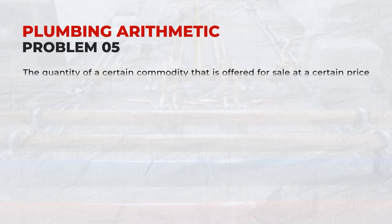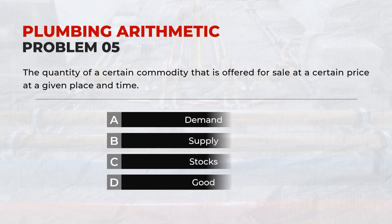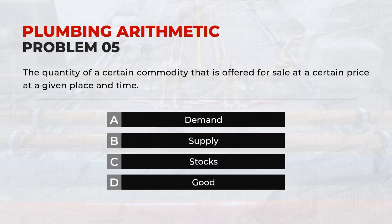The quantity of a certain commodity that is offered for sale at a certain price at a given place and time: B — Supply.